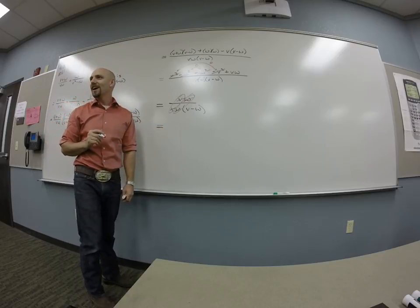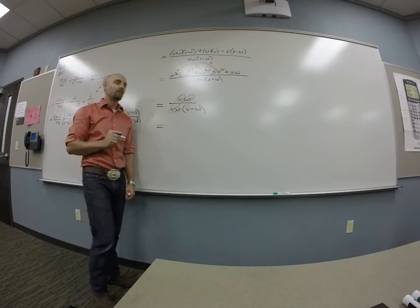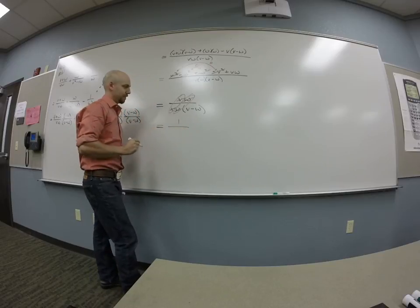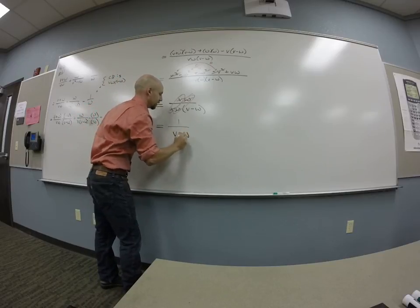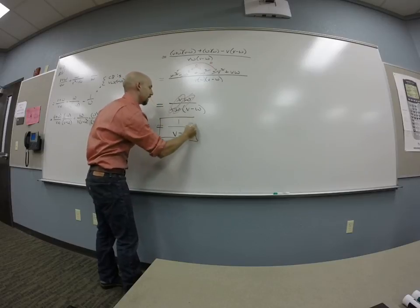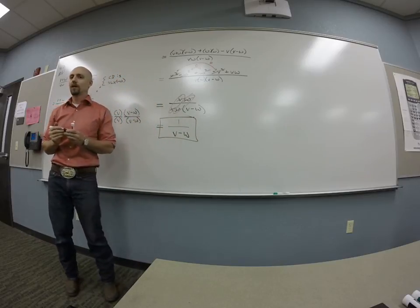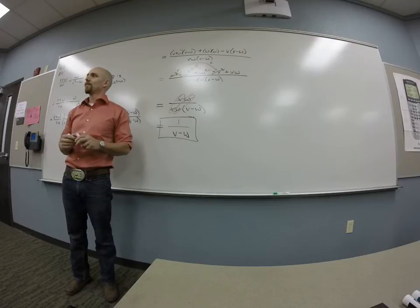Okay, so I get, what's on top? One. And we're over V minus W. And I can't do anything else for that, so I leave it there. I have a very quick question here.